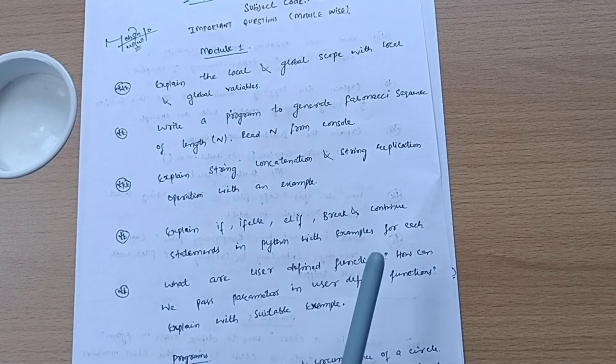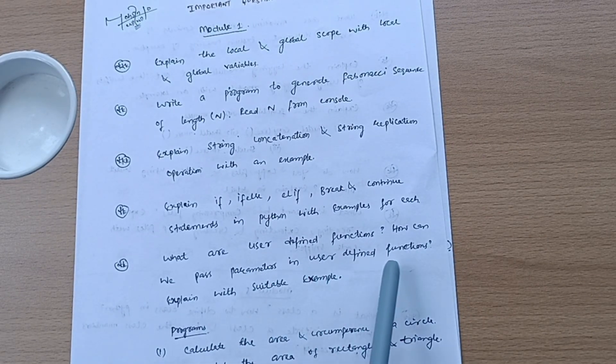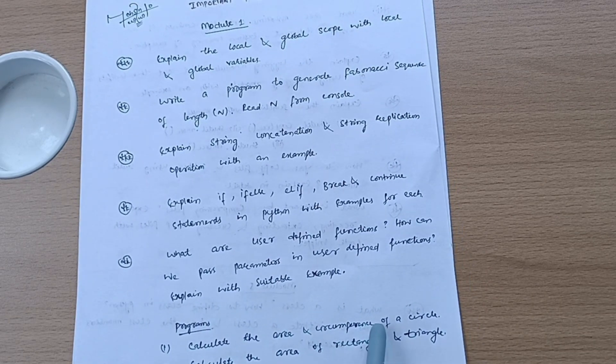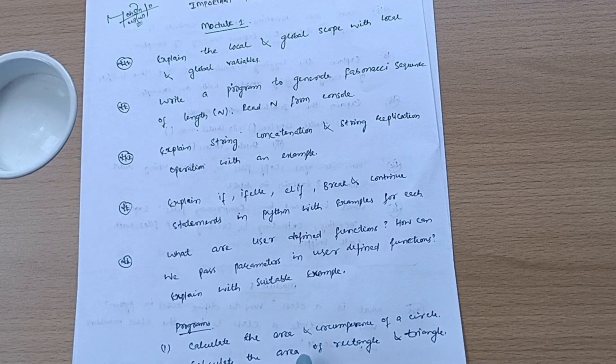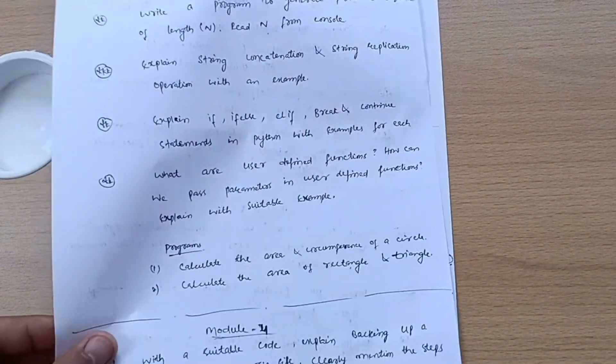What are user-defined functions? How can we pass parameters in user-defined functions? Explain with suitable examples. Some programs are here: calculate the area and circumference of a circle, and calculate the area of rectangle and triangle. This much is all about Module 1.